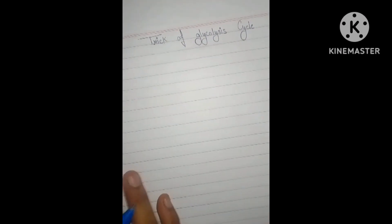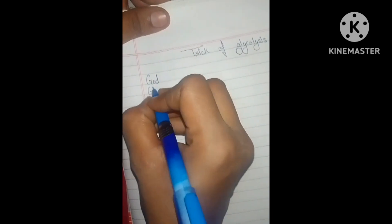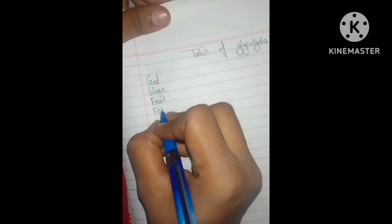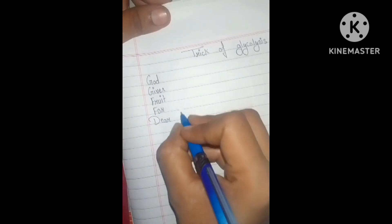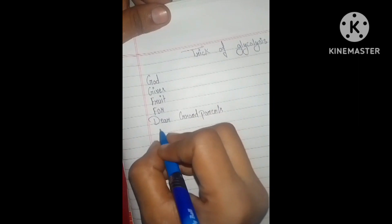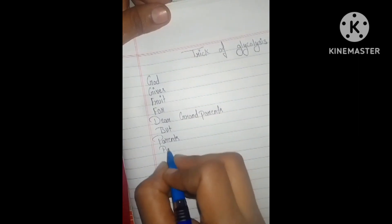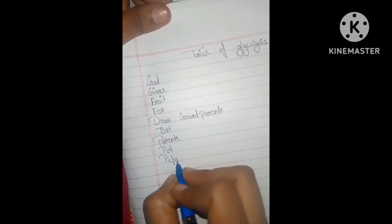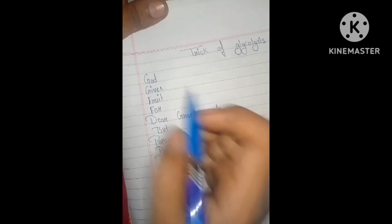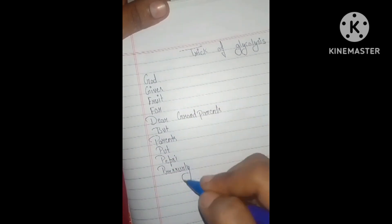Tech of Glycolysis Cycle. God gives proof for dear friend parents, but parents put Pepsi pressure. Bhagwan ne fruits diye grandparents ke liye, lekin parents ne Pepsi diye pressure liye. This is a mnemonic device to remember the steps of the glycolysis cycle.